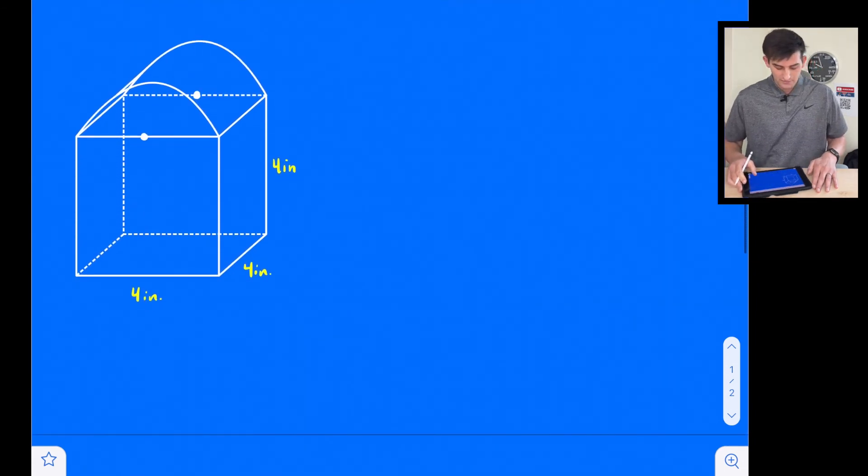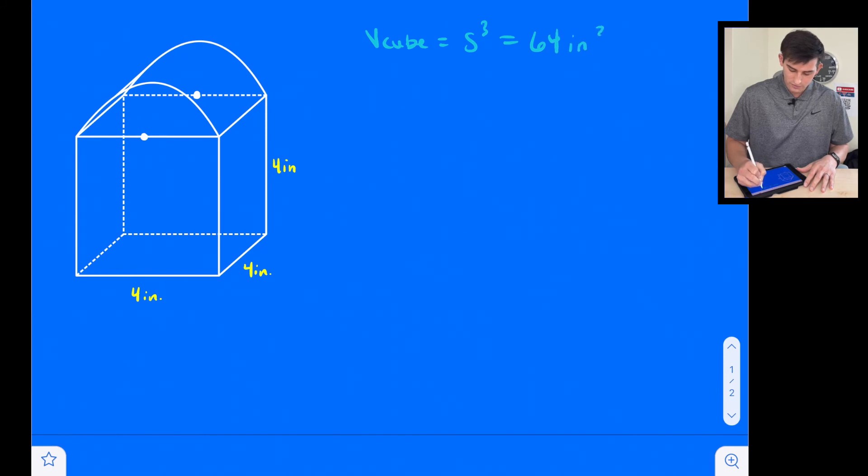Our next example, we have a cube and then it has like half of a cylinder on top of it. So now we want to add these two volumes together. The volume of the cube we can find pretty quickly, it is just side cubed. So our volume of our cube is four cubed, which is 64 cubic inches.